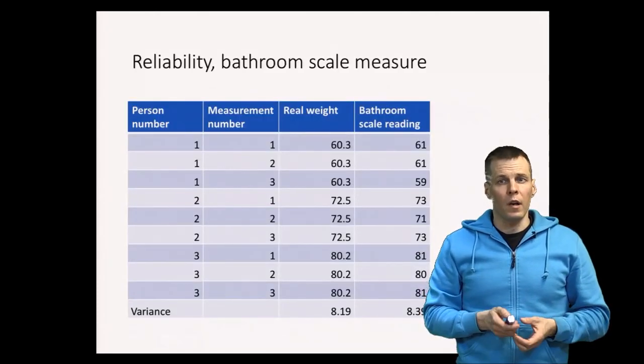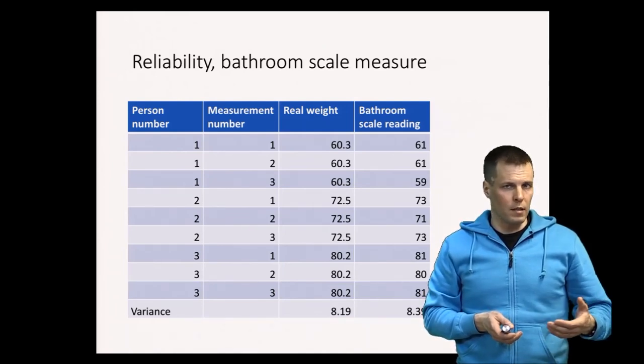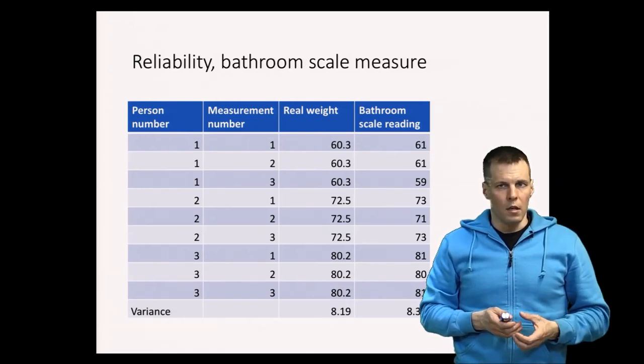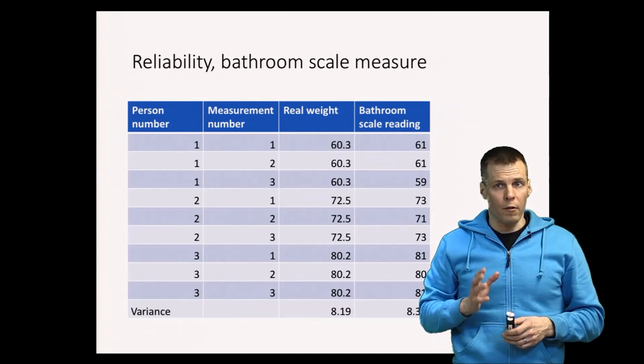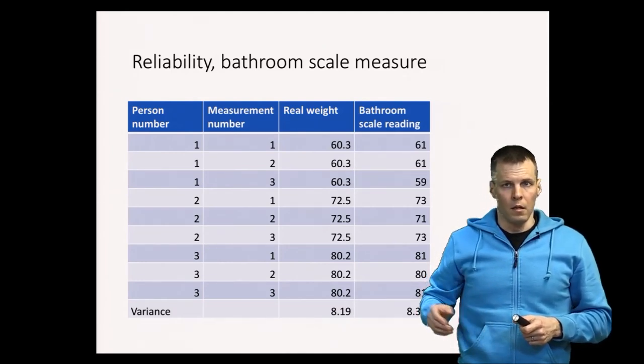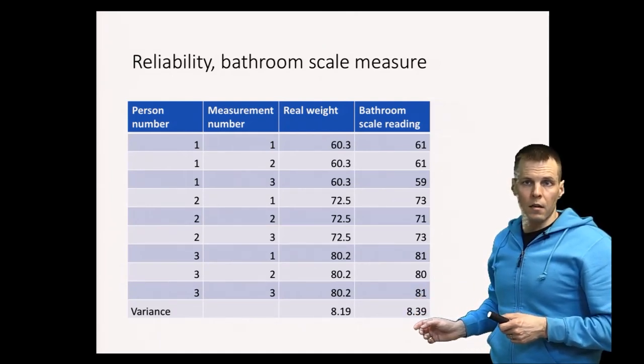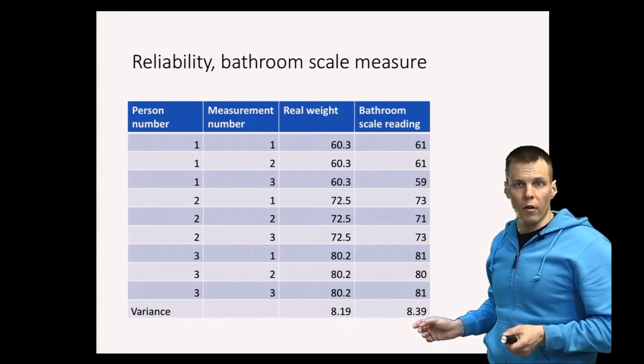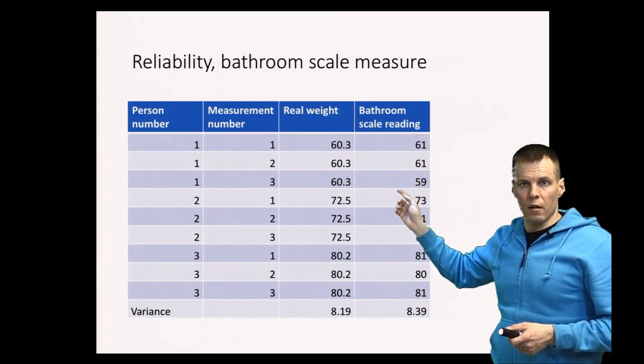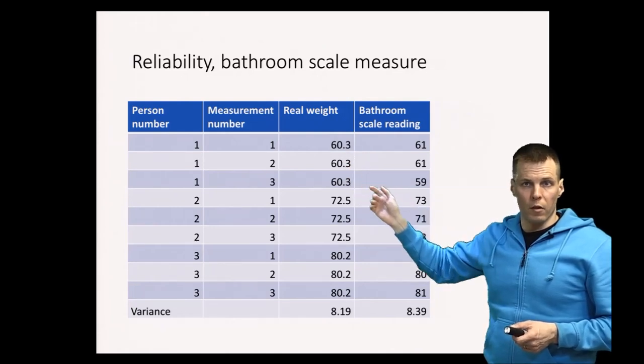The idea of reliability is that if we repeat the same measurement many times, we will get the same result. So it's about the consistency of measurement, the lack of random noise. Here's an example of three people that each have been measured three times using the same bathroom scale. This bathroom scale is completely valid and free from any systematic error, so it gives the correct reading on average, but the actual scale reading varies from one measurement to another, and it's a random measurement error around the real weight of the person.